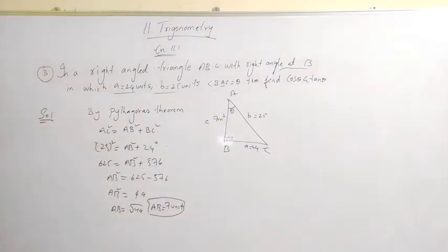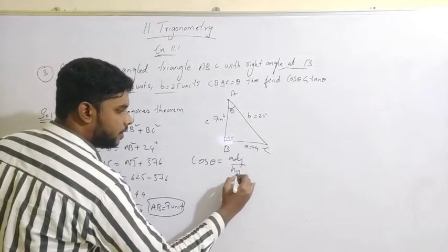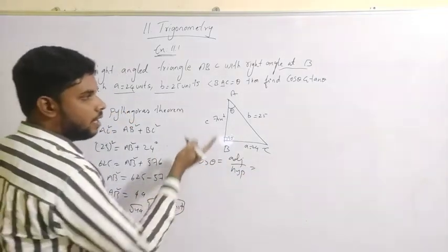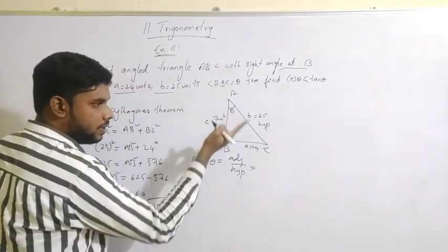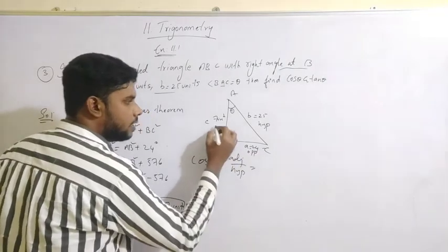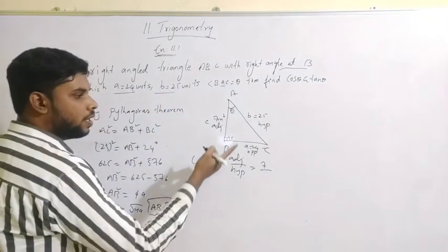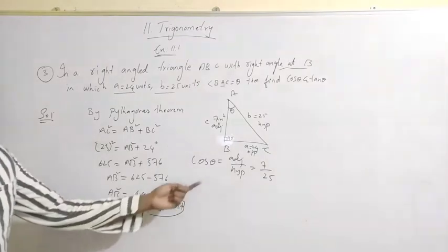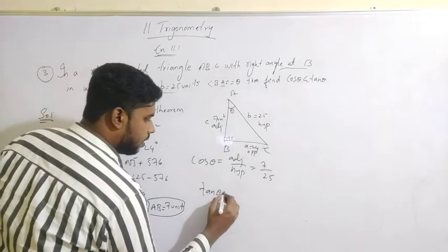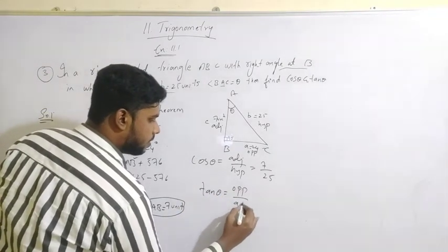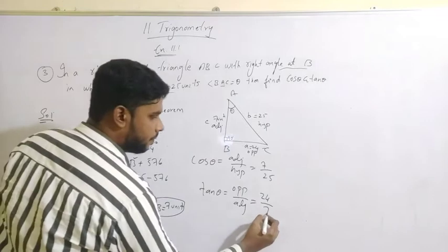Now we can easily find cos theta. The formula for cos theta is adjacent divided by hypotenuse. This is the longest side (hypotenuse), this is my angle theta, this is the opposite side, and this is the adjacent side. Adjacent is 7 and hypotenuse is 25, so cos theta equals 7 by 25. Similarly, tan theta is opposite by adjacent: opposite is 24 and adjacent is 7, so tan theta equals 24 by 7.